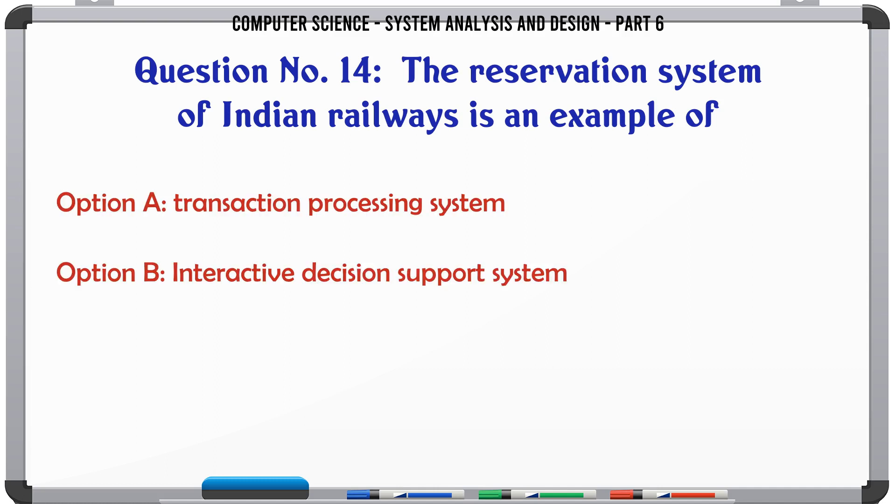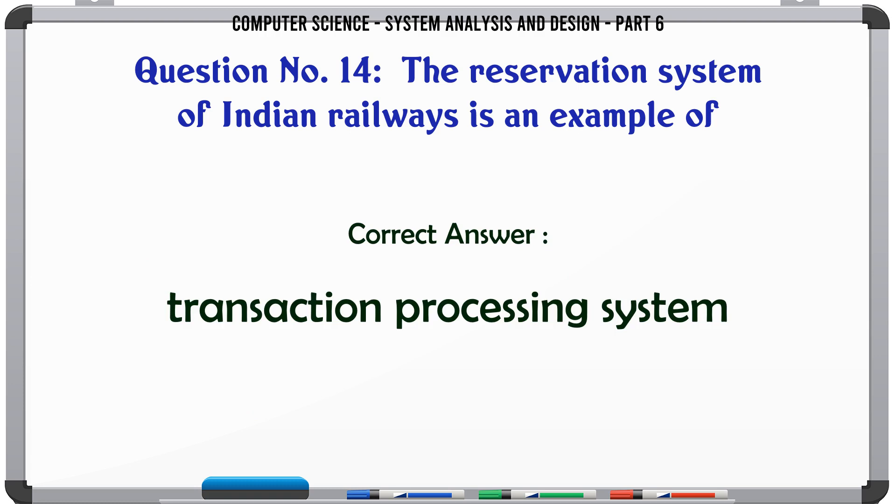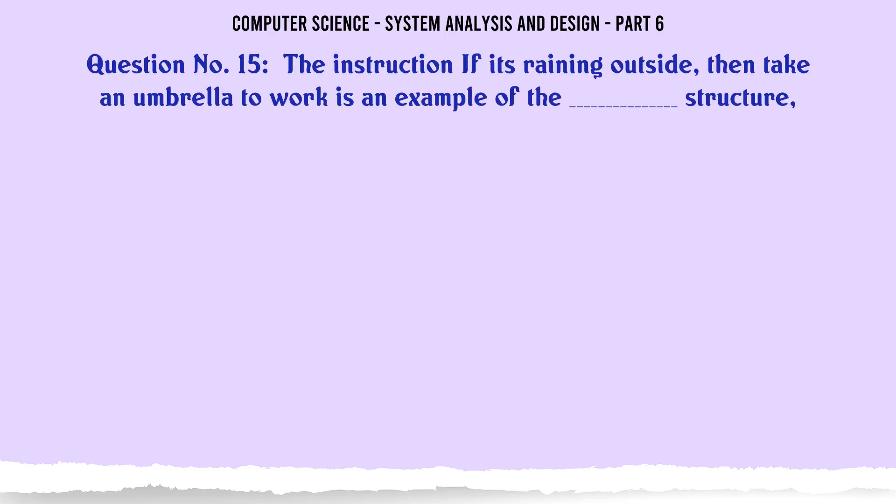The reservation system of Indian railways is an example of: A. Transaction processing system, B. Interactive decision support system, C. Management controls system, D. Expert system. The correct answer is: Transaction processing system.